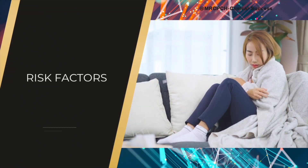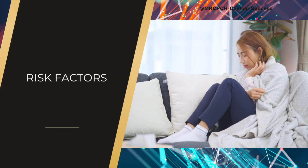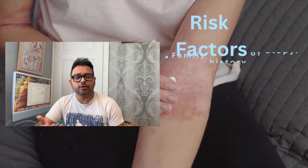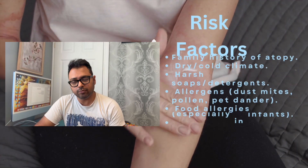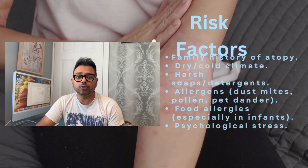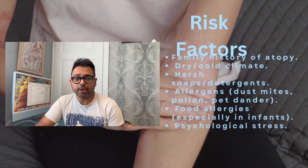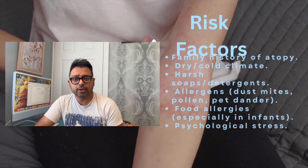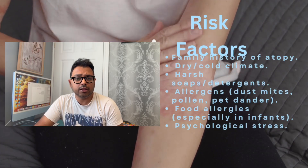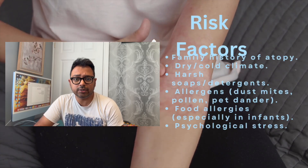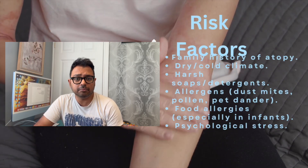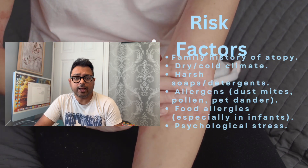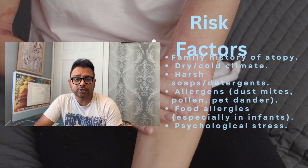What are the risk factors? First, family history of atopy. Next, dry or cold weather, harsh detergent use, and allergen exposure like dust, pollen, and pets. Any food allergies are most often associated with infants. Psychological stress is also a risk factor.